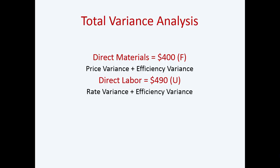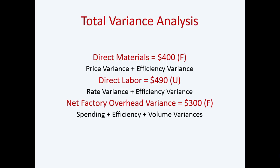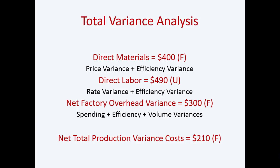Total variance analysis looks at direct materials, direct labor, and net factory overhead. For direct materials, it's usually a two-way variance — price variance and efficiency. For direct labor, also a two-way variance — rate and efficiency. For overhead, you can look for more detail: spending, efficiency — how are you using those units you spent money on — and then the volume variance. Did you make more? Did you use more to produce less? This gives you a net total production variance cost. Because in your financials you're only going to see the total; then you back into the analysis portion to figure out the why.